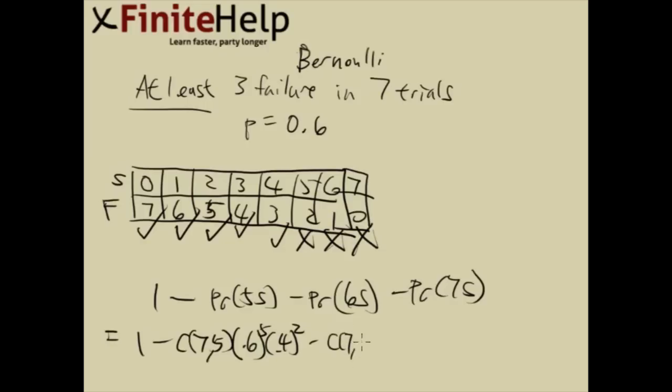Here it's going to be 7 choose 6, 0.6 to the sixth, 0.4 to the one. And then the last one we have 7 choose 7, 0.6 to the seventh, and 0.4 to the zero.